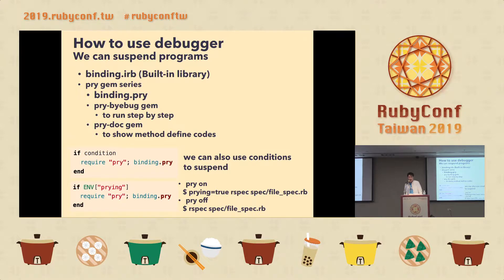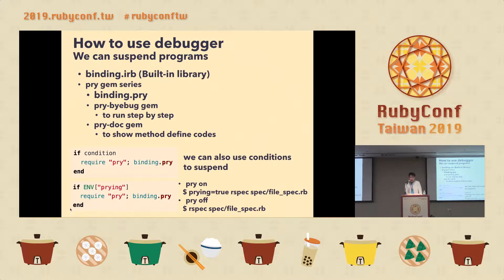We can also use some pry gems, and we can use a condition to suspend — like this. And it's useful to use M. When using M, we can choose to stop or not on the console, like prying true and pry off.